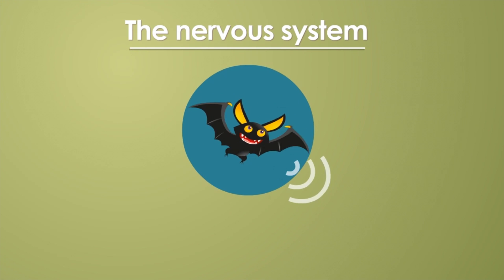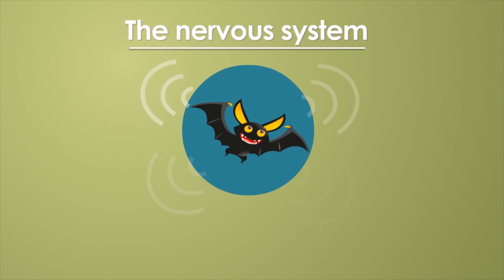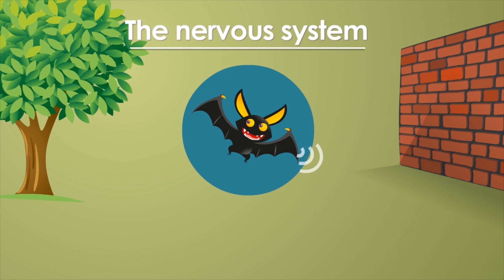Another example is bats. They emit high-pitched sounds that human beings cannot perceive. Why do they emit those sounds? In order to recognize the environment, the sound they emit rebounds against the wall, a tree or their favorite insects, so that they know the environment, even though there is no light.